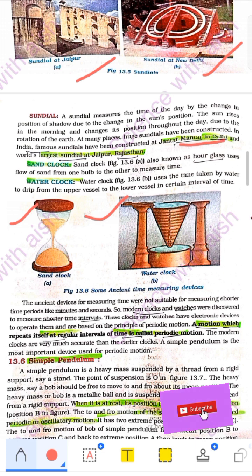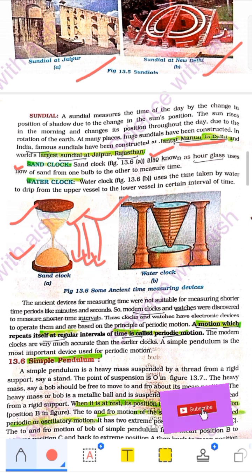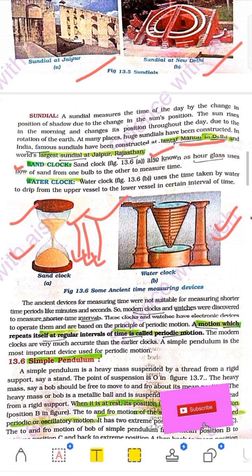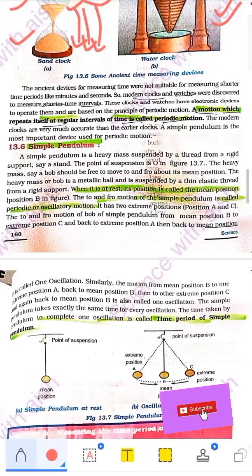You should know: where is the Jantar Mantar? In Delhi. Where is the world's largest sundial? In Rajasthan. Remember that question — where is the world's largest sundial? Rajasthan is the main answer. Now, what is the sand clock? Sand is on top and it slowly falls down. When it is finished, the time is gone. A water clock worked the same way. These are the ways people measured time in the old days.